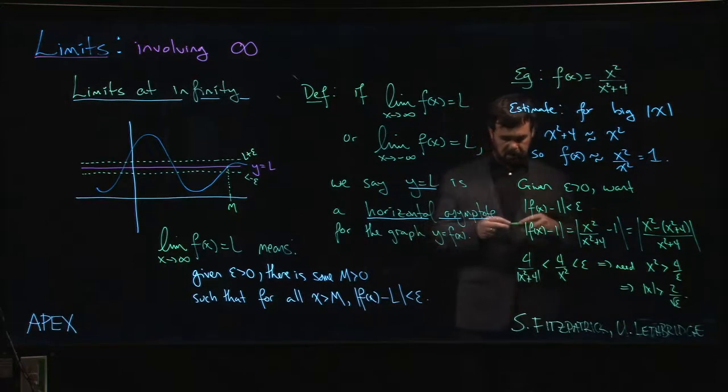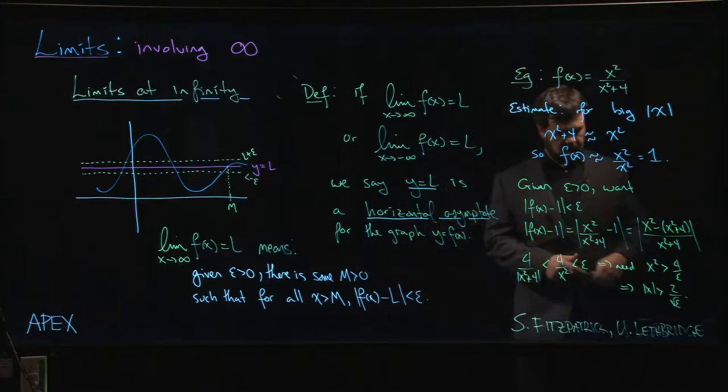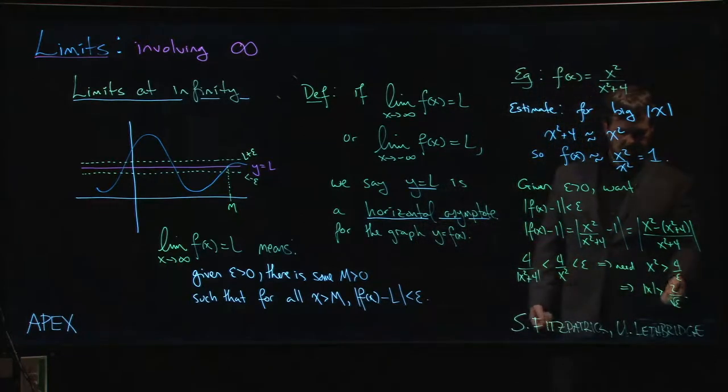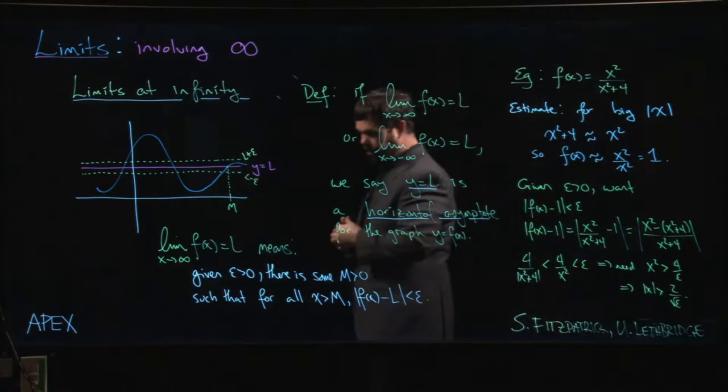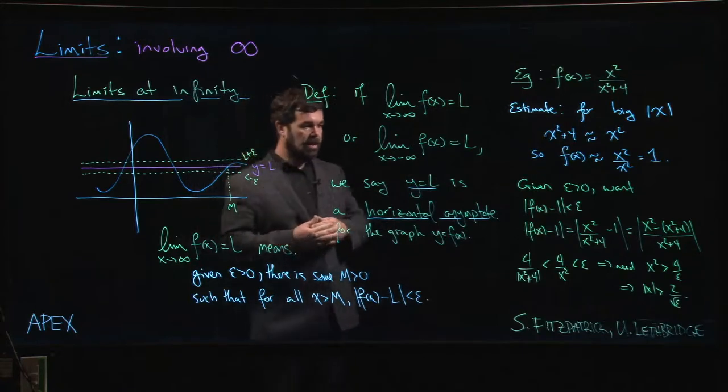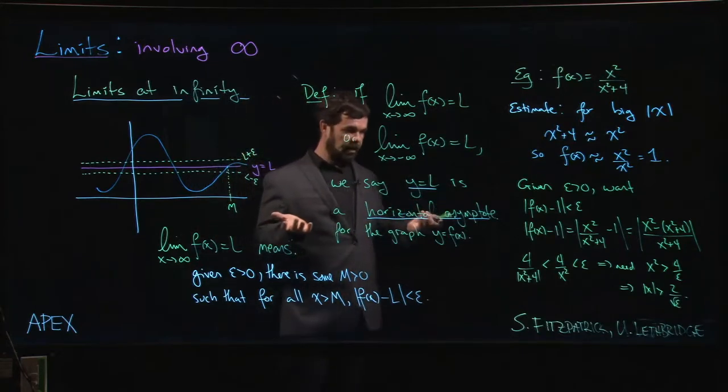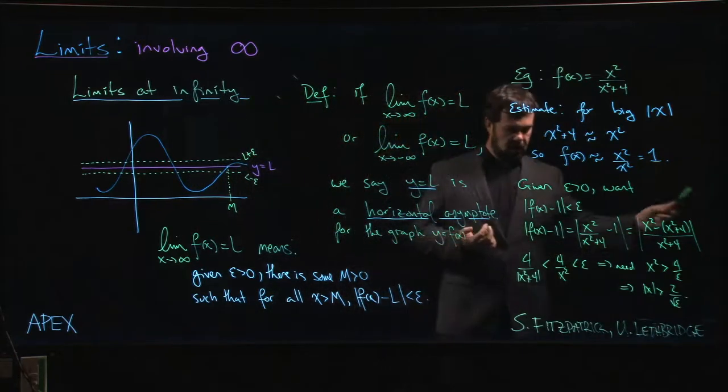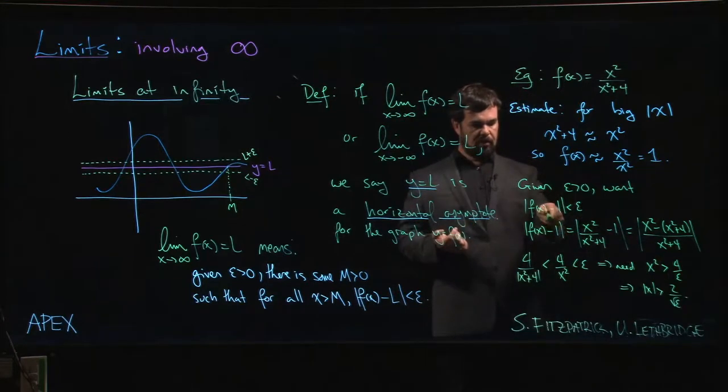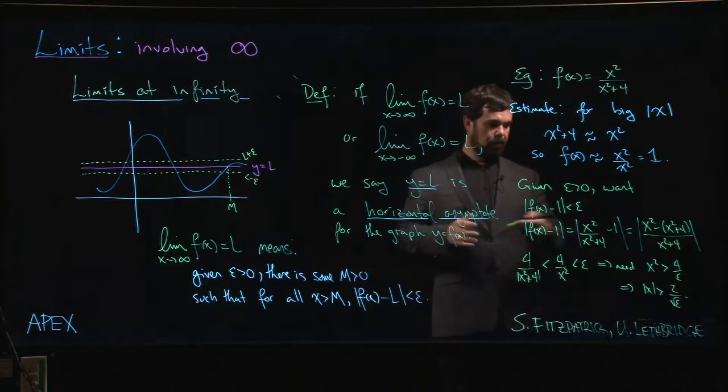So if you wanted to turn this into a proof, your m would be 2 over root epsilon or minus 2 over root epsilon if you wanted to do the limit as x goes to minus infinity. You'd assume that x is bigger than that value, and you'd turn it around until you got to f of x minus 1 being smaller than epsilon. And okay, you've established the fact.